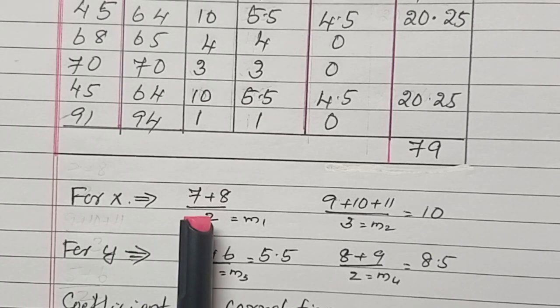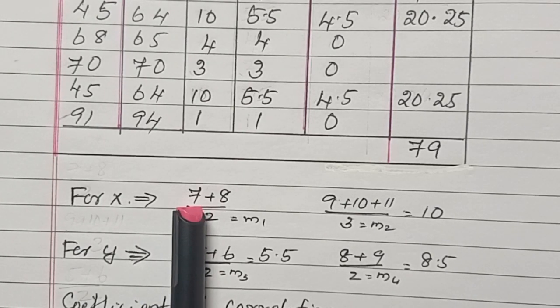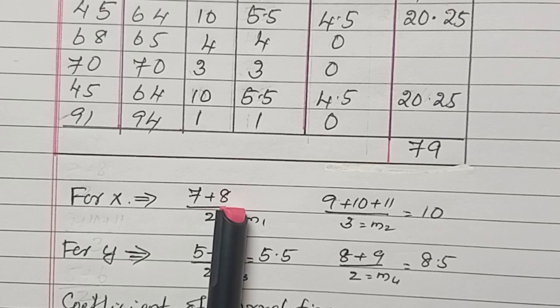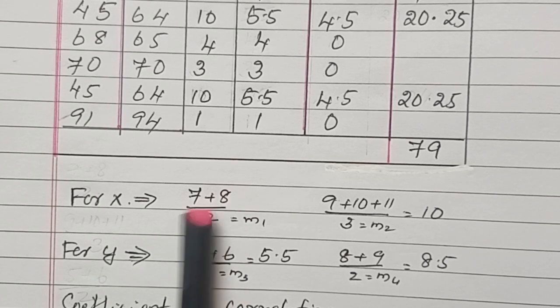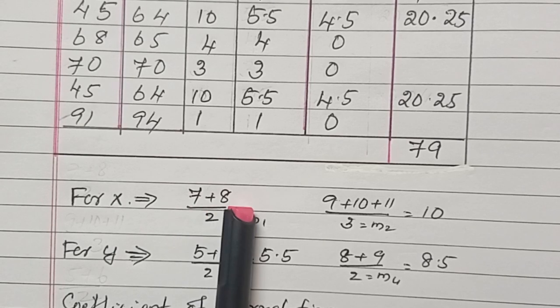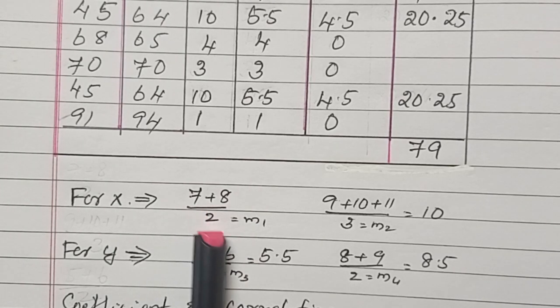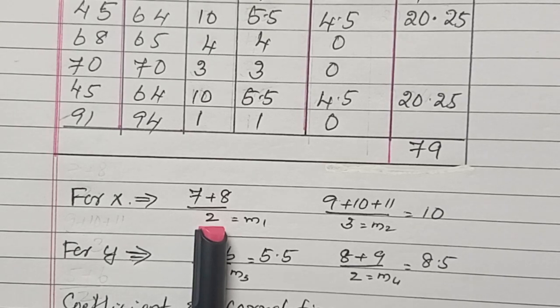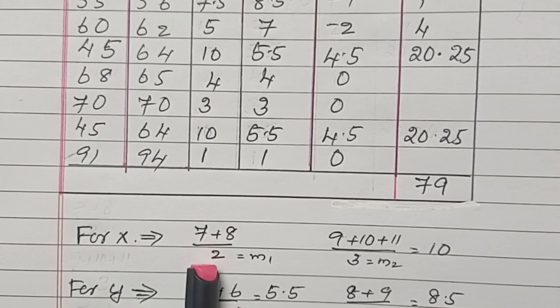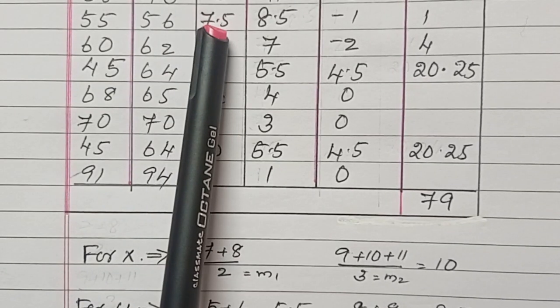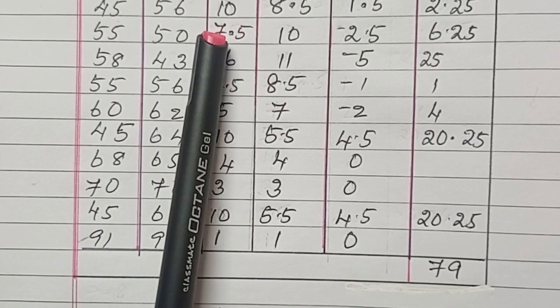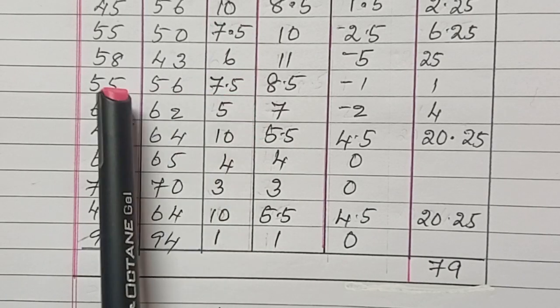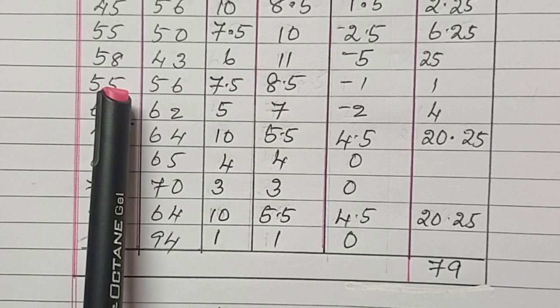For X variable, seventh rank and eighth rank is repeating for the number 55. Therefore, we are adding 7 plus 8, dividing by 2, and we get 7.5. Writing 7.5 here and also here.